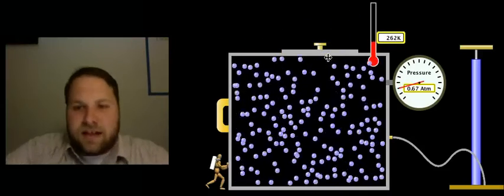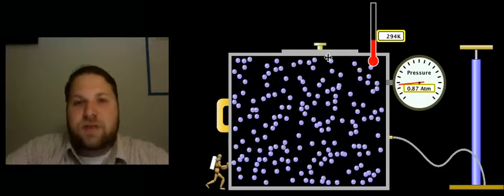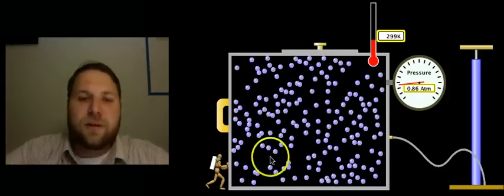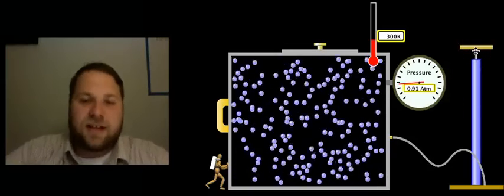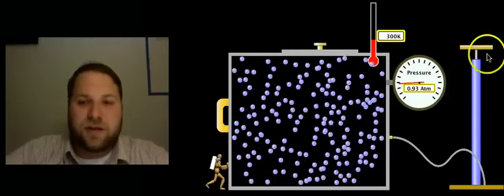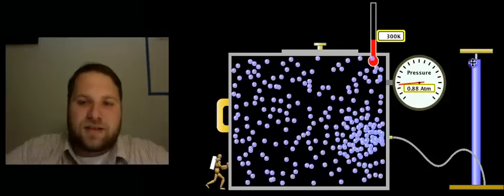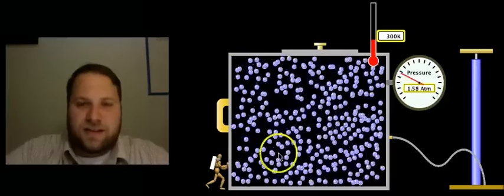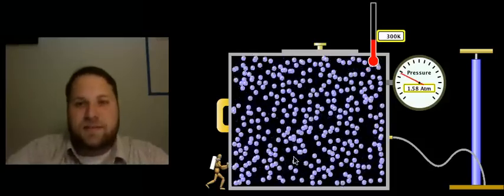What this tells us is that there is a directly proportional relationship between the number of particles and the pressure. When the number of particles goes down, so does the pressure. Let's see if it works the other way. Let's add particles and watch what the pressure does. As we do, we see that the pressure increases, and now it's climbed almost to 1.6 atmospheres.